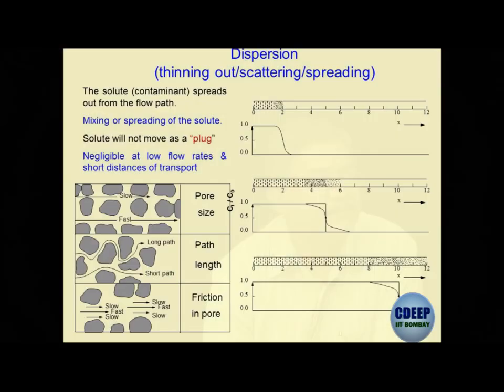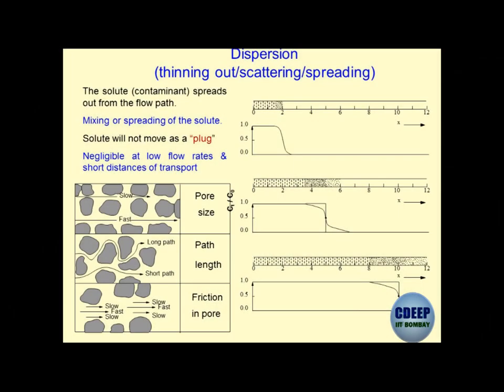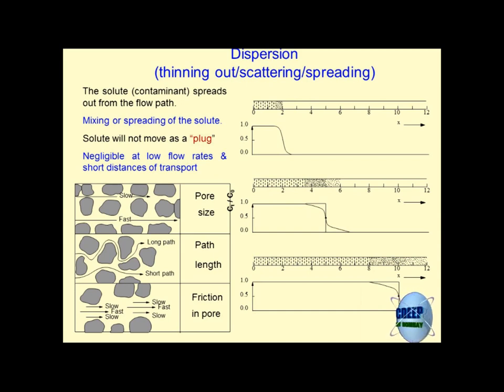X0 and LC's are some boundary conditions for solving this mathematical expression. Now let us talk about the second mechanism, which is dispersion. Yesterday somebody used the word dispersion and I asked them to wait - it is not correct to use it casually. Dispersion is something totally different.